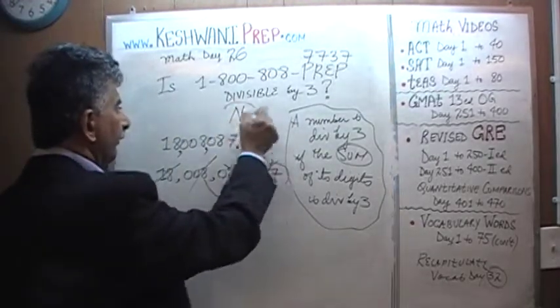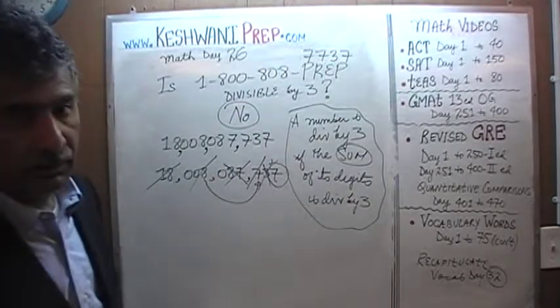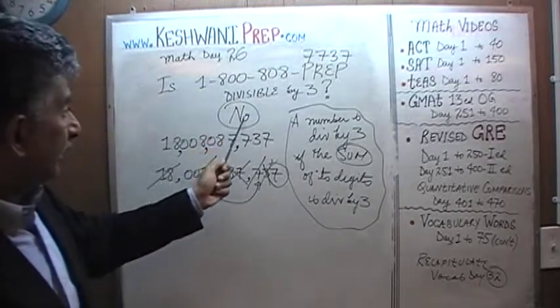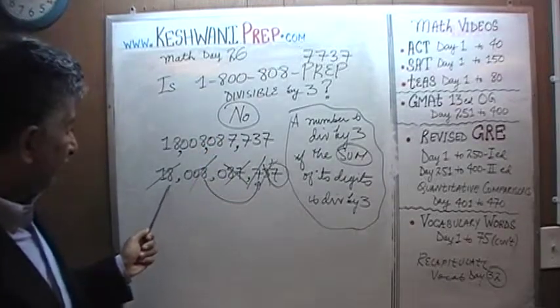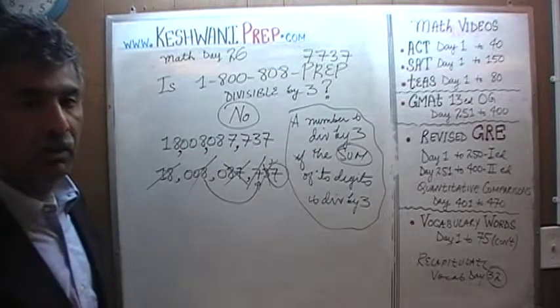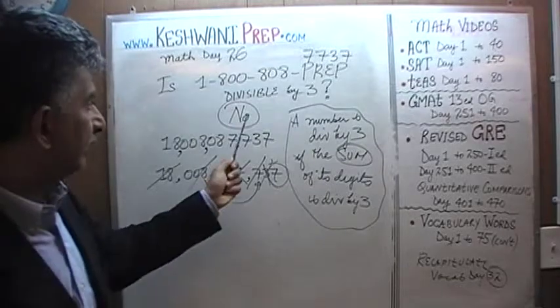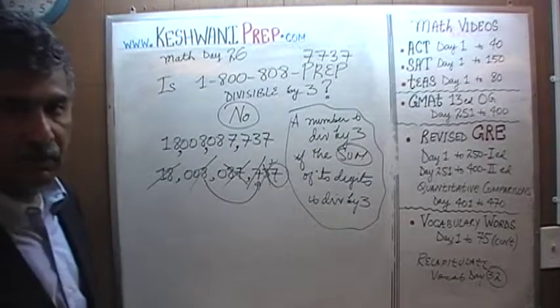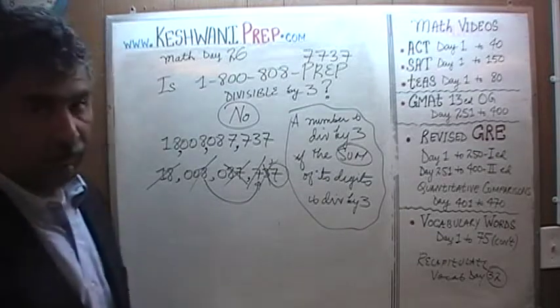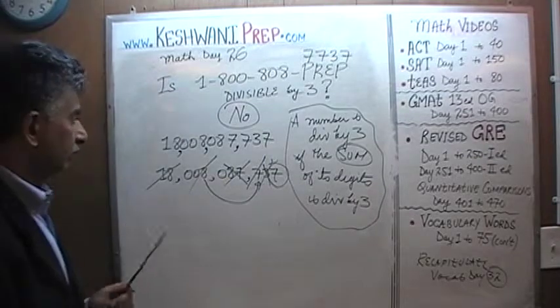The answer is no, it's not divisible by 3. We have a 7 at the end. In other words, if you were to try to divide this number by 3, if you were to try to divide 18 billion 8 million 87 thousand 737 by 3, we will find that we will have a remainder of 1 because 7 divided by 3 is a remainder of 1. At the end we have 7, it will have a remainder of 1. Let's divide it by 3, shall we? We are going to actually divide it by 3. Now that we know it is not divisible, we will have a remainder of 1. Let's divide it and see what happens.